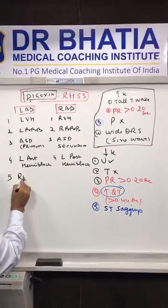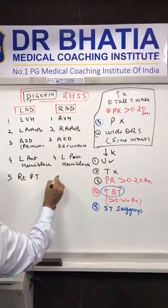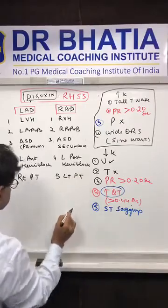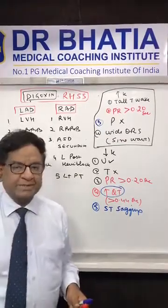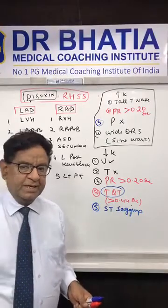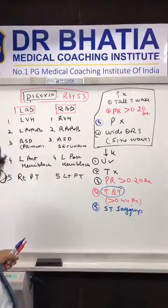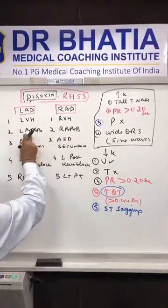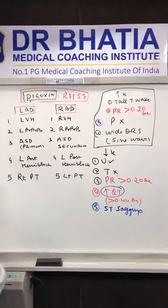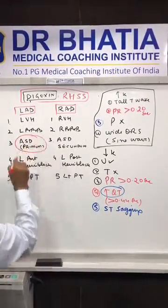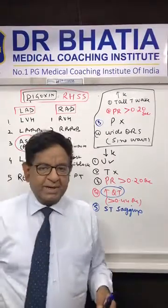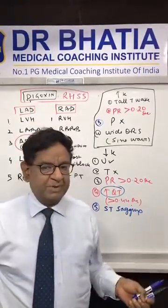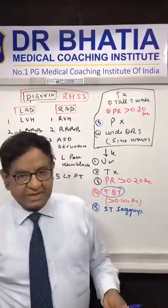Right pneumothorax leads to left axis deviation, and left pneumothorax leads to right axis deviation. An important exam question: ASD with primum gives left axis deviation, ASD with secundum gives right axis deviation — you can differentiate primum from secundum by ECG just by looking at the axis.